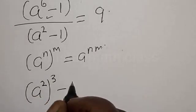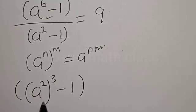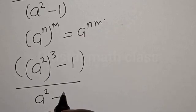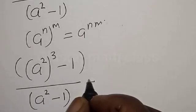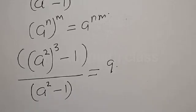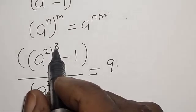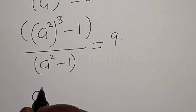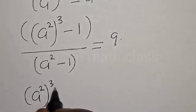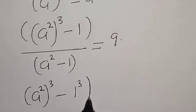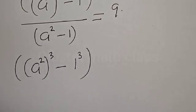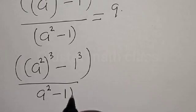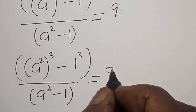Let's express a⁶ - 1 as (a²)³ - 1³. We have (a²)³ - 1³ divided by (a² - 1) is equal to 9.